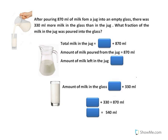Hi, welcome to yesterday's challenge. Let's look at the question first. After pouring 870 ml of milk from a jug into an empty glass, there was 330 ml more milk in the glass than in the jug. What fraction of the milk in the jug was poured into the glass?